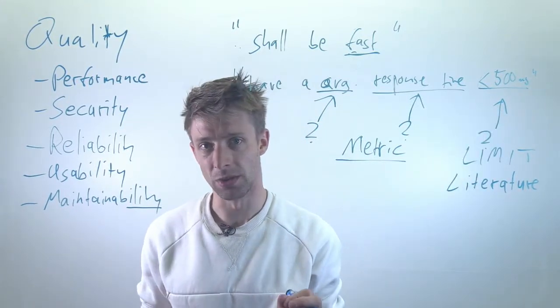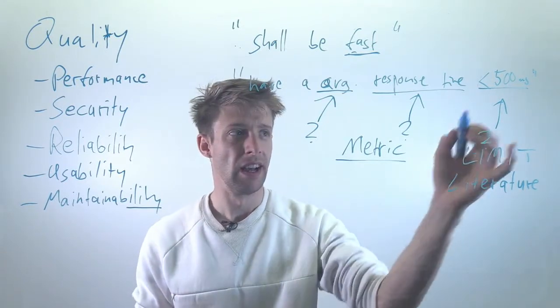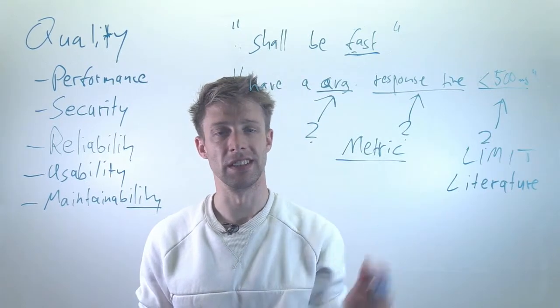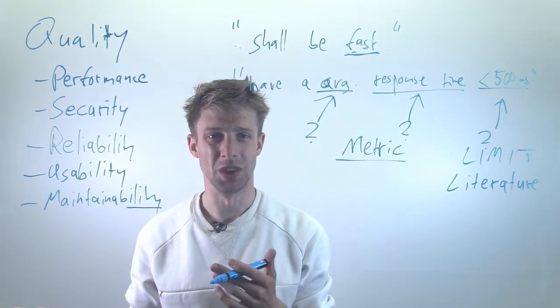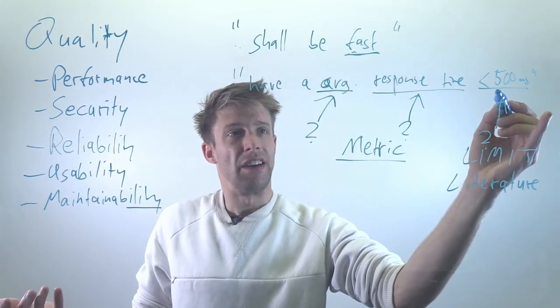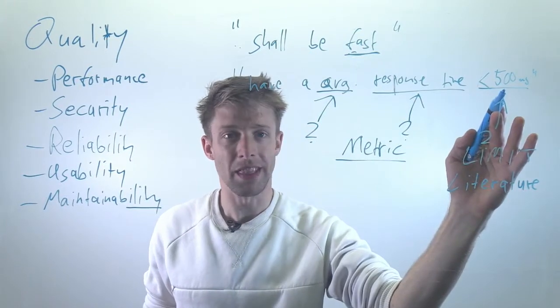So if you have any kind of literature to base your limits on, that can be a good source. Otherwise, you can also do measurements. You can test with people and maybe figure out most people thought it was pretty okay at 500 milliseconds. If it got more, they got really annoyed. So then you have an idea.